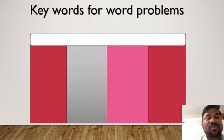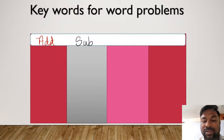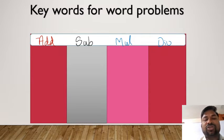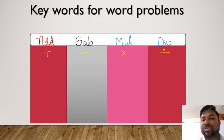The main keywords relate to four concepts. The first one is addition — the symbol is plus. The second one is subtraction — the symbol is minus. The third one is multiplication, and the fourth one is division. These are the four operations we generally come across.